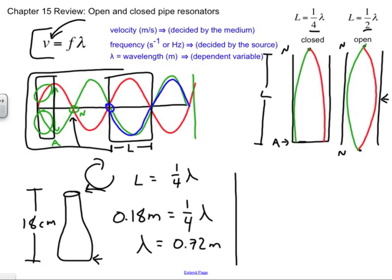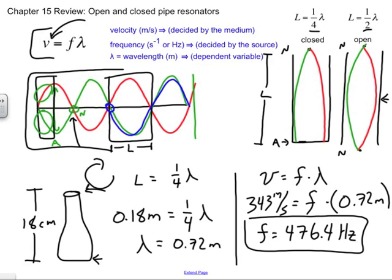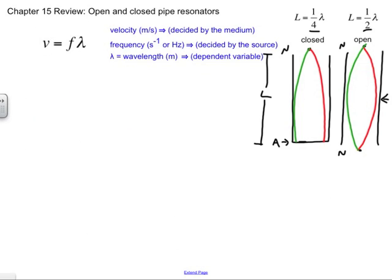Now that I know what lambda is, I can come over and I can say the velocity is equal to the frequency times lambda. I'm trying to solve for the frequency. Velocity is 343 meters per second, speed of sound, is equal to the frequency times the lambda I just solved for, that's in meters. And I find that the frequency is equal to 476.4 Hertz. That's my final answer.